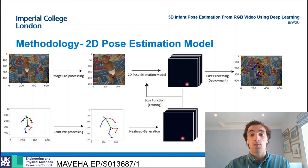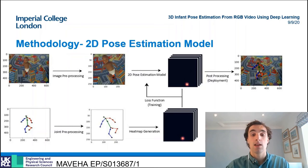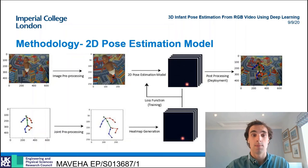To form the ground truth for such models, a heat map for each key point is produced by placing a symmetrical 2D Gaussian at the key point's coordinate location. Inference of the final joint location is found as the coordinate with the maximum value on the predicted heat map.